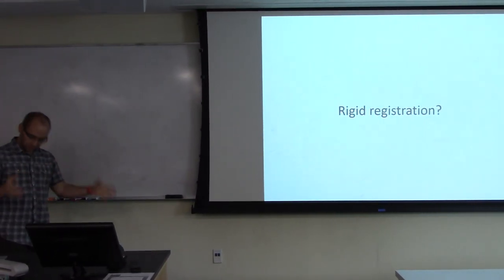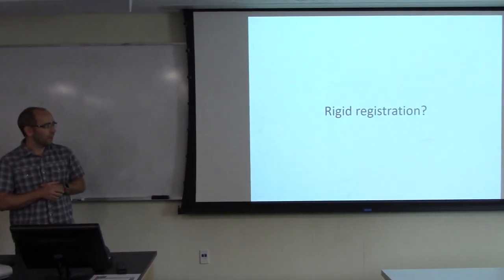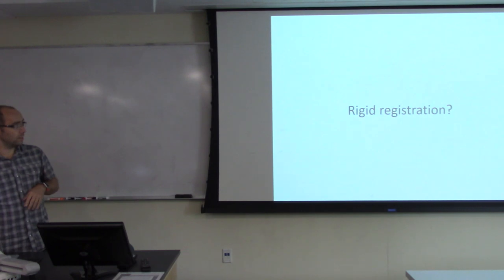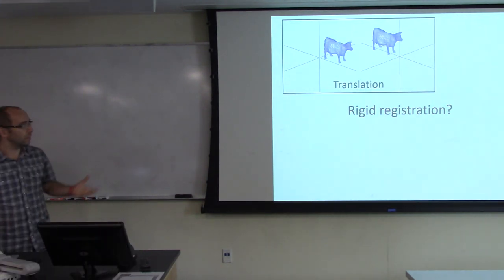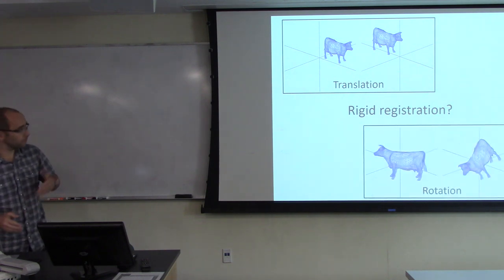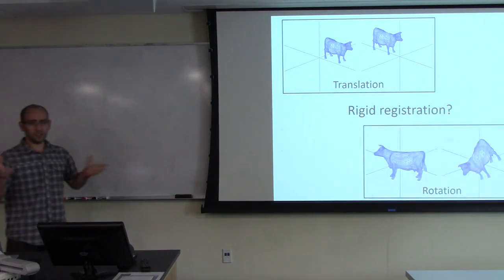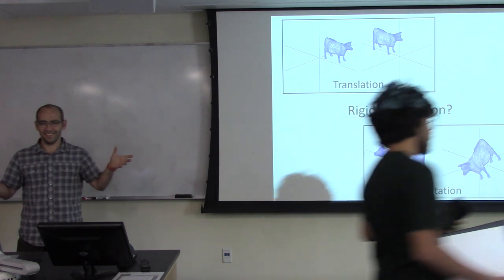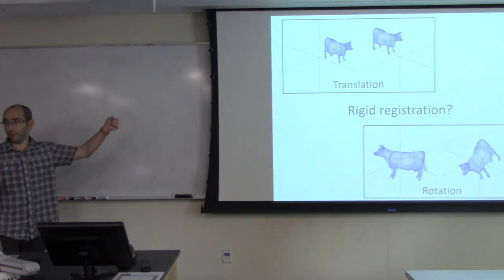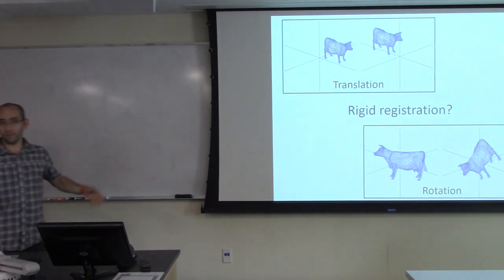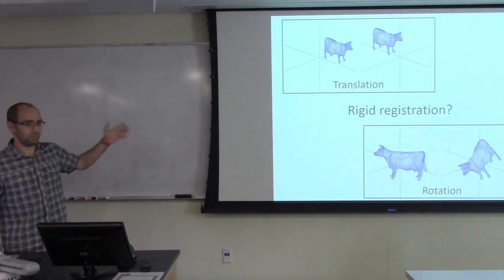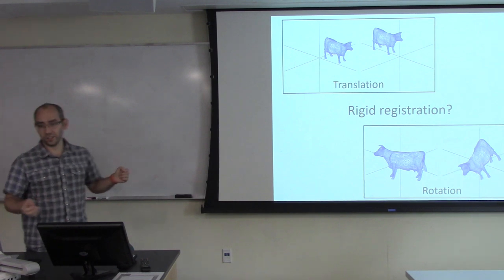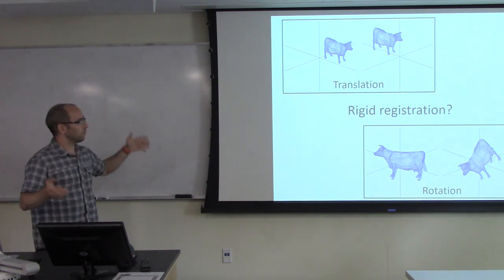We were looking at registering shapes — very simple rigid registration. When you're looking at rigid registration, you're trying to match up two shapes and find the rigid registration that best aligns them. There are two components: the translation part and the rotation part. If I asked you to find the translation that best aligns two shapes, what would you do? You'd take the center of mass of one and move it to the center of mass of the other. And you can actually show that under a volume-preserving deformation, this gives you the optimal translation, regardless of which bijection or definition you use.